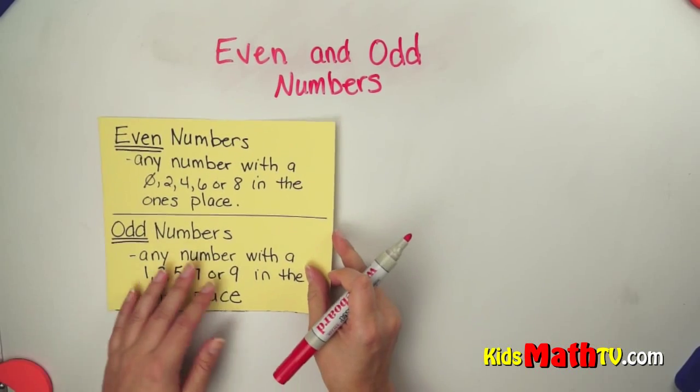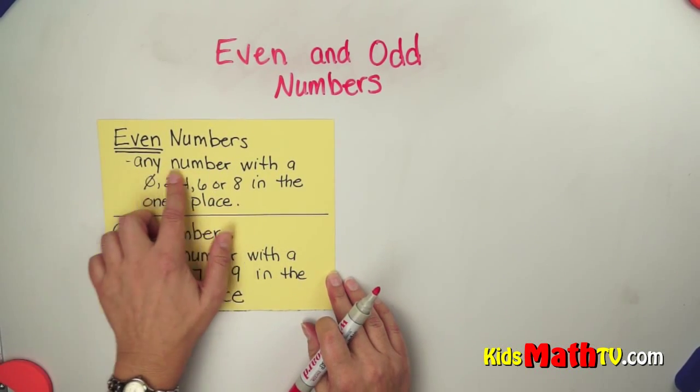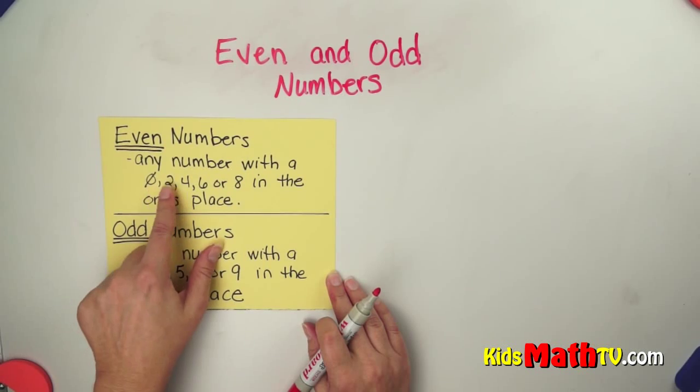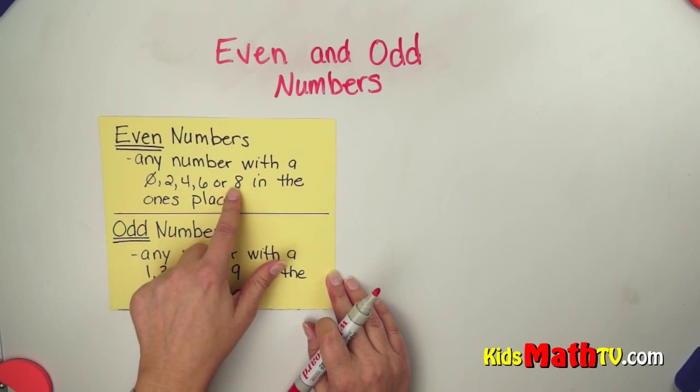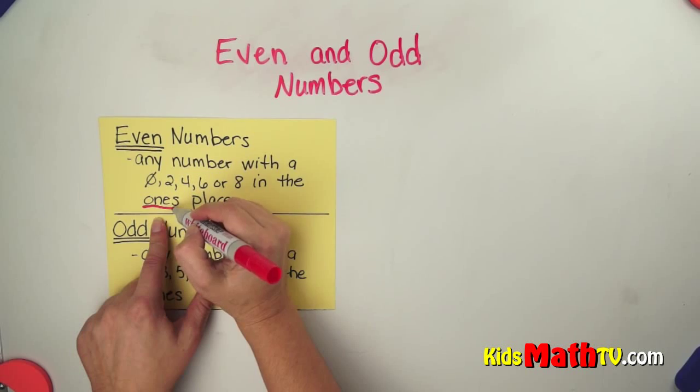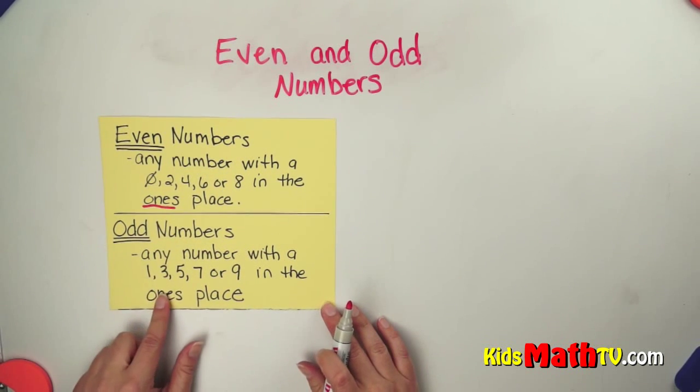We have two different types of numbers. We have even numbers, which is any number with a 0, 2, 4, 6, or an 8 in the ones place. So we are only looking at the ones place, which is kind of nice.